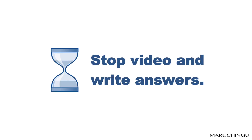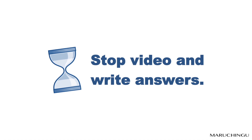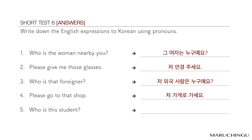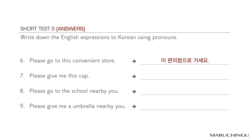Stop the video and write your answers, please. Answers. 1번: 그 여자는 누구예요? 2번: 저 안경 주세요. 3번: 저 외국 사람은 누구예요? 4번: 저 가게로 가세요. 5번: 이 학생은 누구예요? 6번: 이 편의점으로 가세요. 7번: 이 모자 주세요.